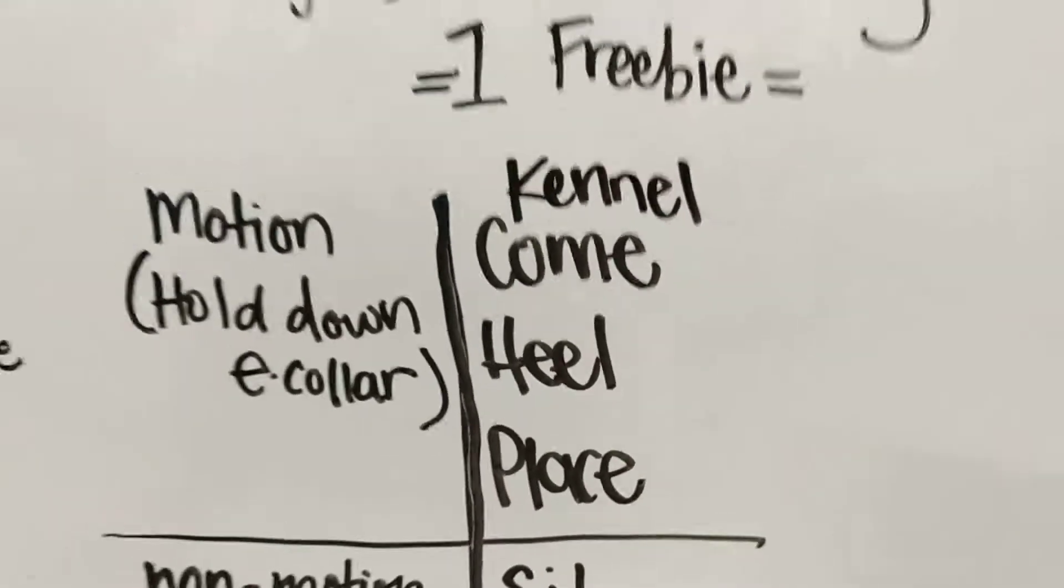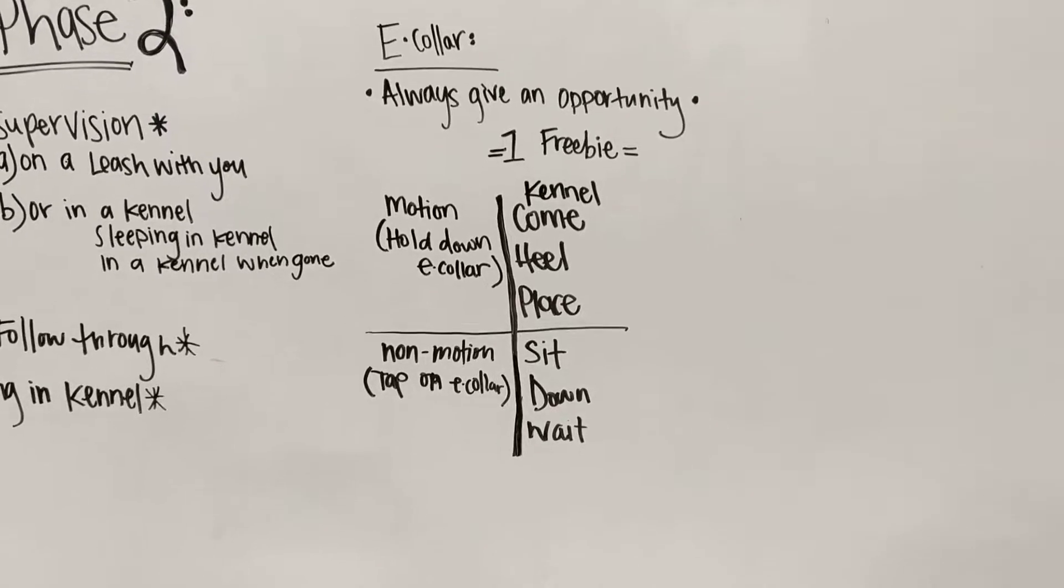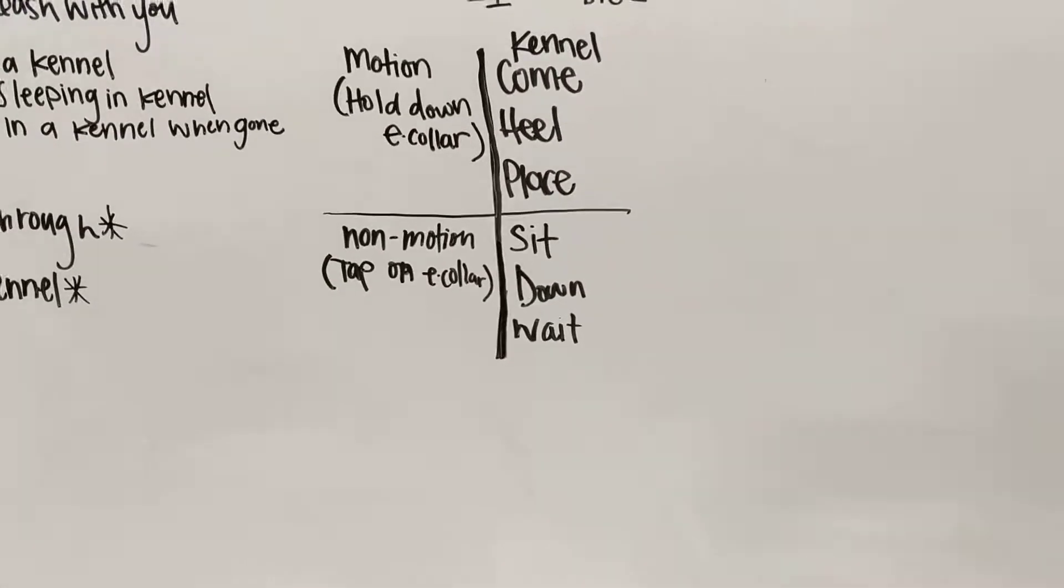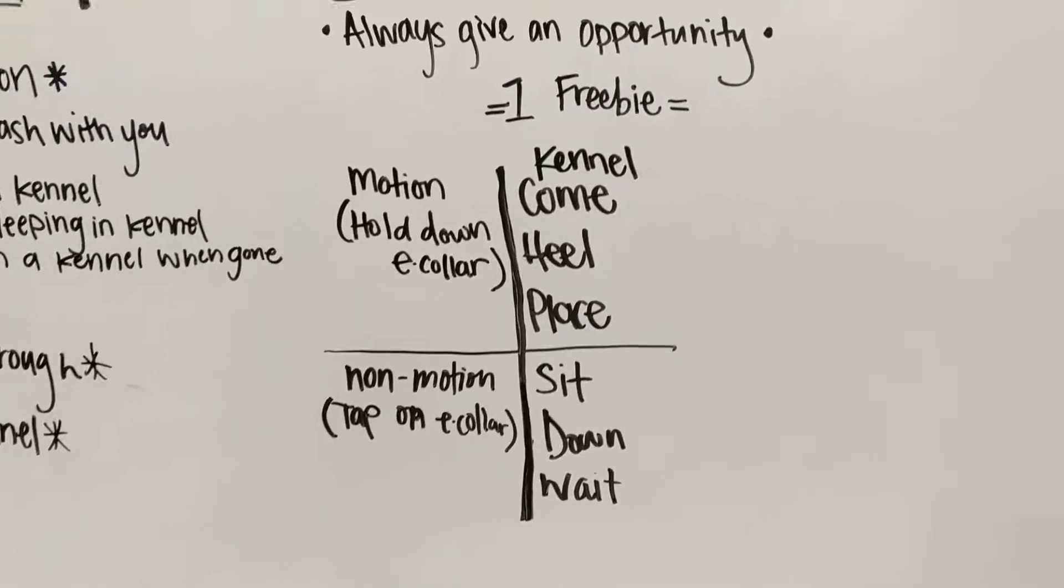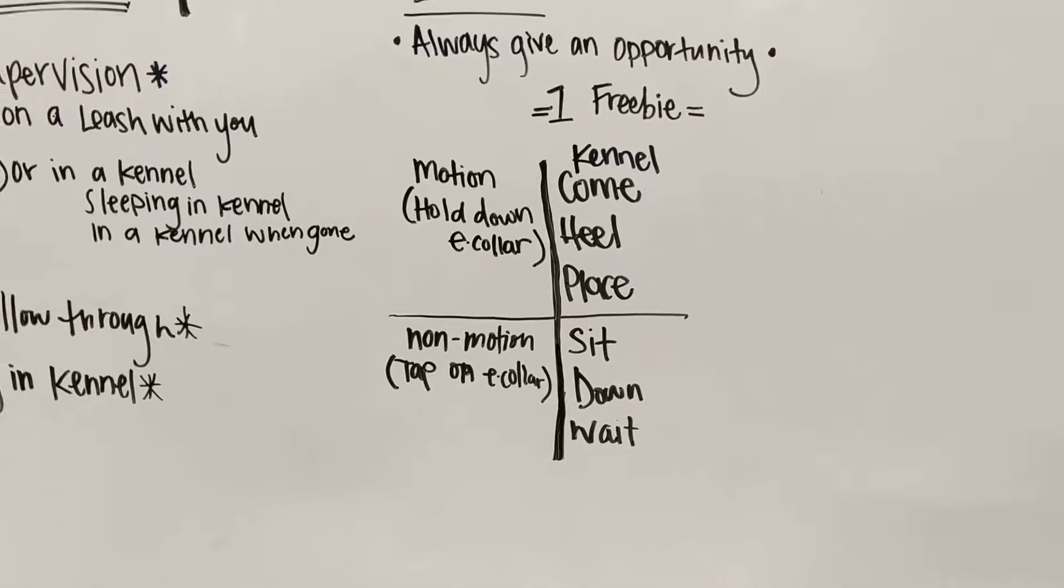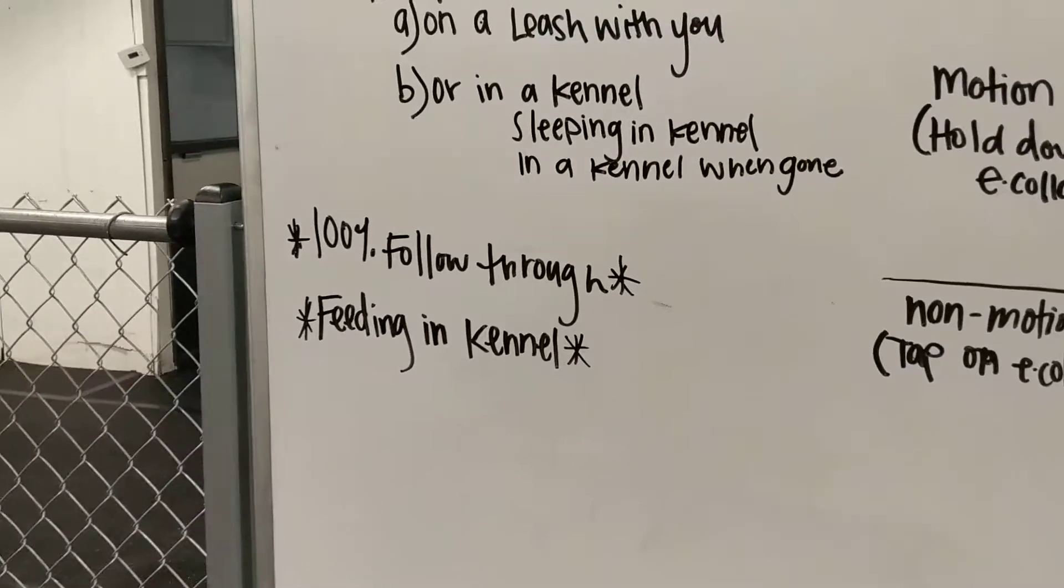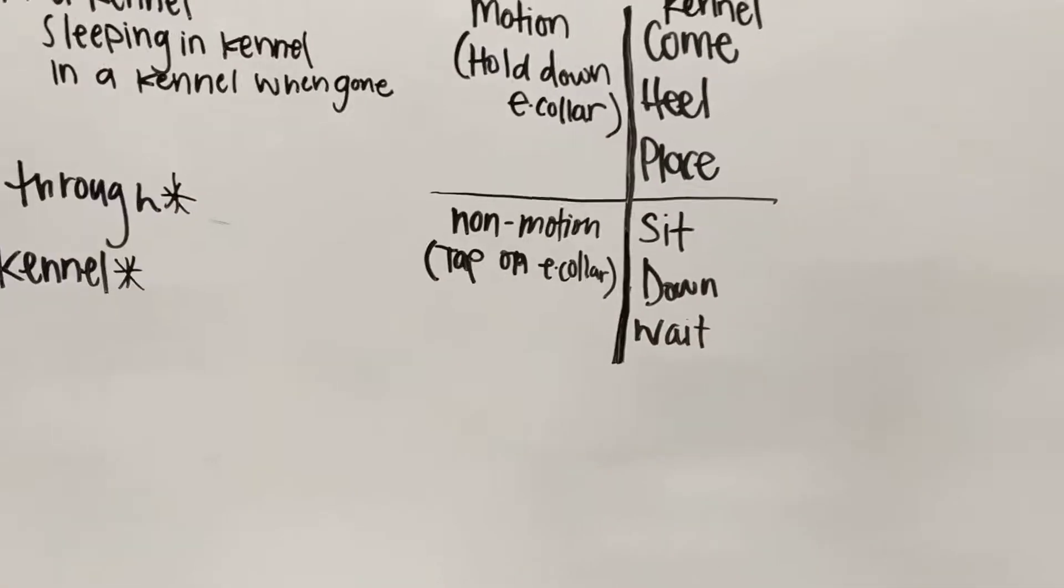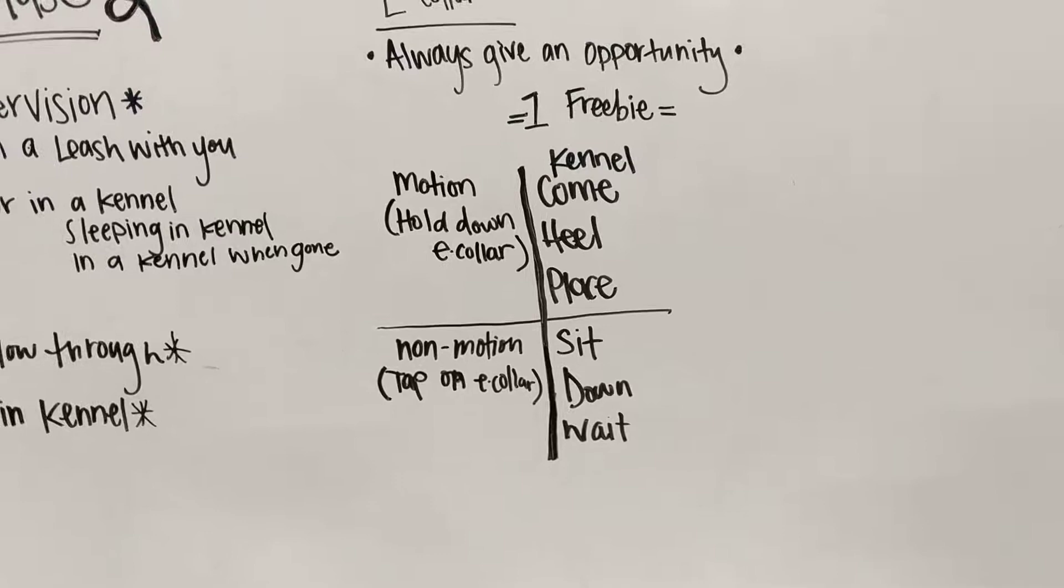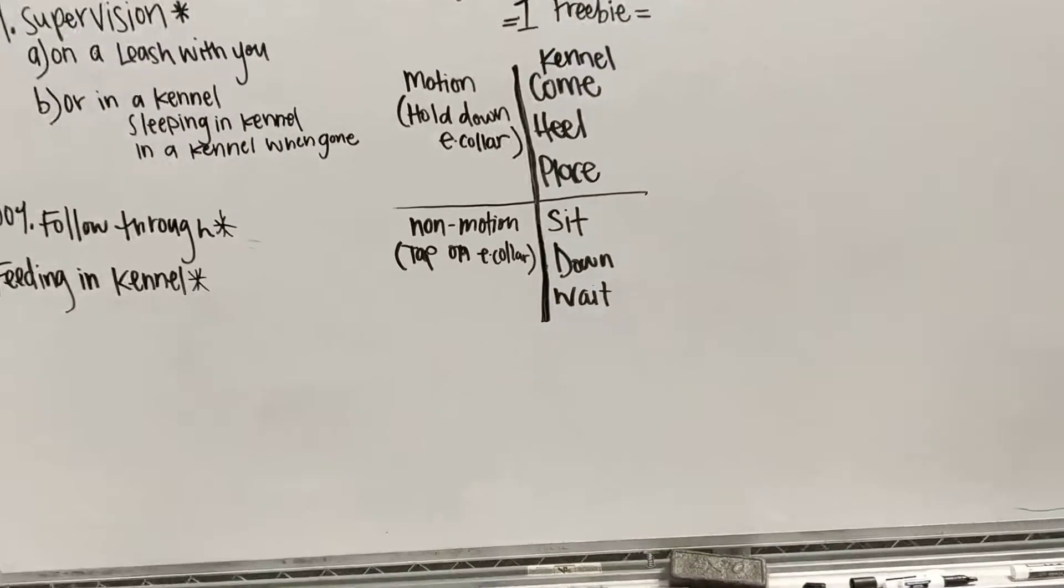Okay. So what the e-collar - I always give them an opportunity. So I give them one freebie. So what I mean by that is the first time I say Coda kennel or Coda place or whatever, I'm not using the e-collar, they get an opportunity to do the behavior. I only give them one free command though, because I don't want him to learn to tune me out. I want to go back to my second rule over here - 100% follow through. So what I'll do is like, for example, the kennel, we'll say Coda kennel, give him that opportunity. If he doesn't kennel, I'm going to hold down the e-collar and guide him back in.